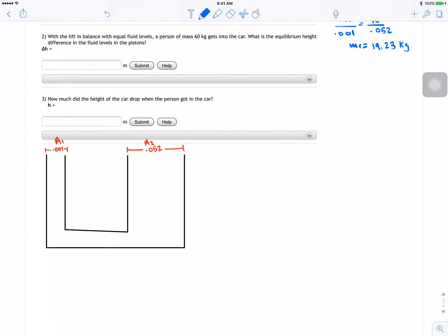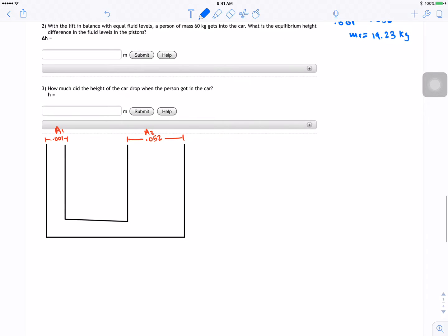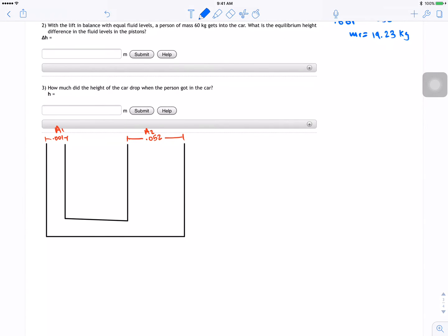So I'm going to do it over here. So what we're going to do is when the person gets into the car, the pressure is going to increase on the right side. So that means the fluid level of the oil is going to increase to make it the same as the person. So we need to find the pressure due to the person and we're going to make it equal to the pressure due to the increase of oil.